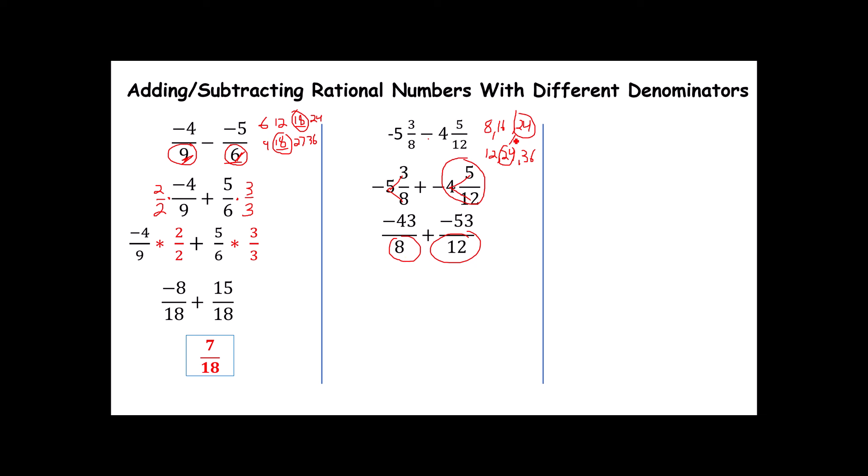So instead of turning this into some horribly large number, I'm going to change it into twenty-fourths. What do I need to multiply by to turn my 8 into a 24? Well, that's a 3. How do I turn a 12 into a 24? That's a 2. If I were to multiply those out, I would get -129 over 24 and -106 over 24. The denominators are the same, so I just add the numerators. Notice this is an improper fraction, so I'm going to try and turn that into a mixed number by taking 24 into 235. It goes in nine times with 19 left over.